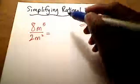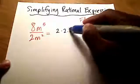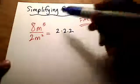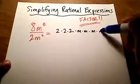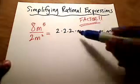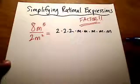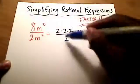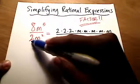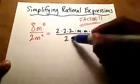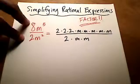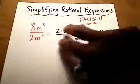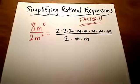See that 8 right there? I'm going to rewrite it as 2 times 2 times 2. And m to the fifth simply means m times m times m times m times m — it means 5 m's being multiplied together. On the denominator I have just a single 2, and m squared means m times m. So I took my original rational expression and, using factoring, wrote them all out as factors — the entire numerator, the entire denominator.